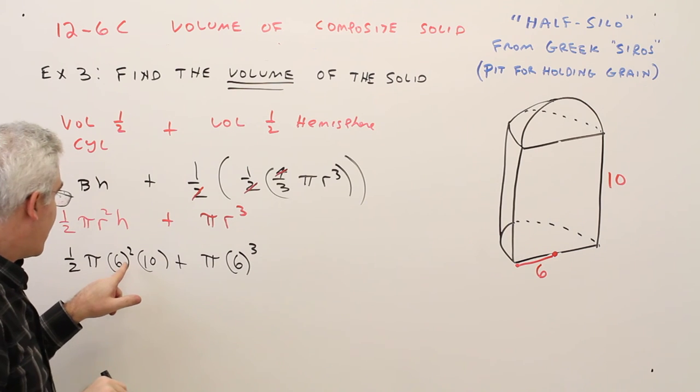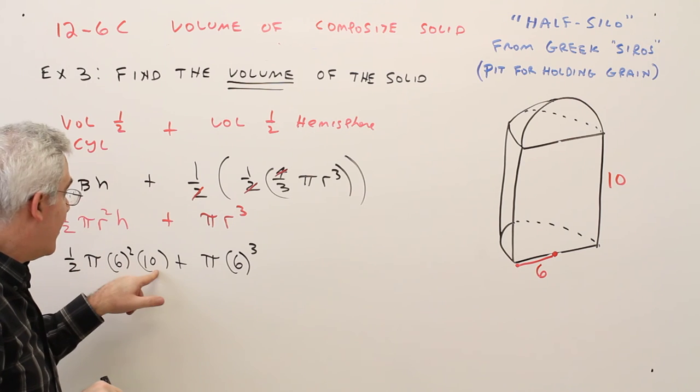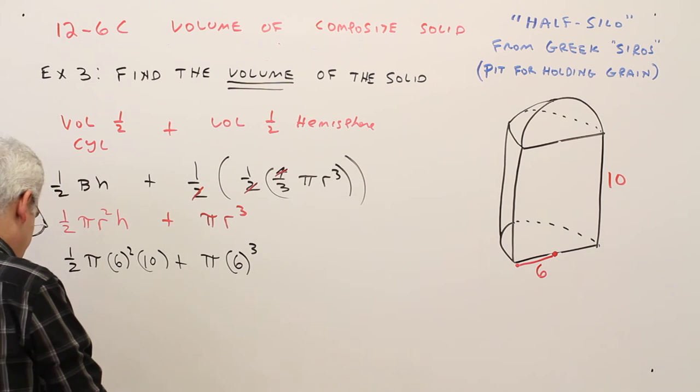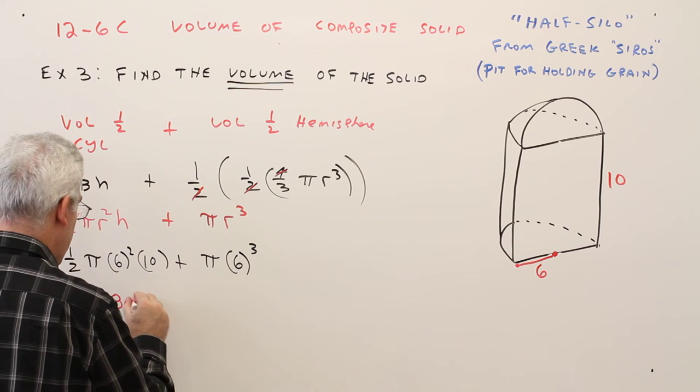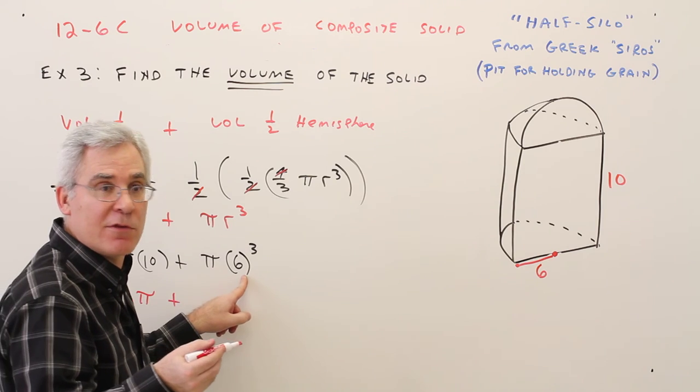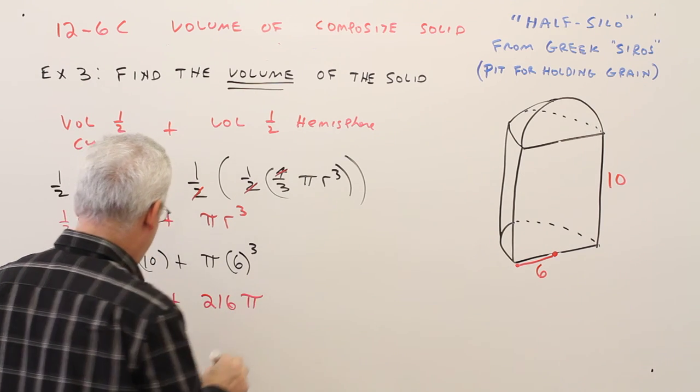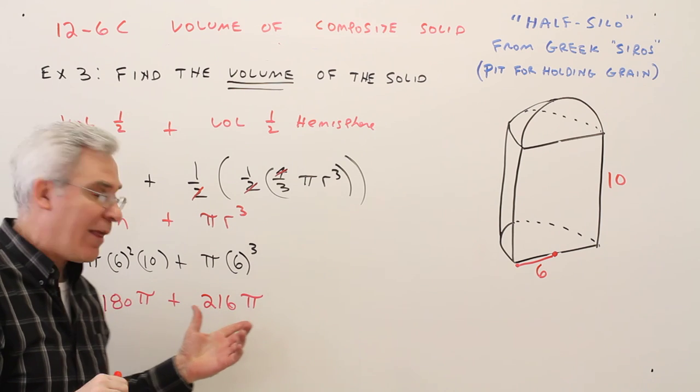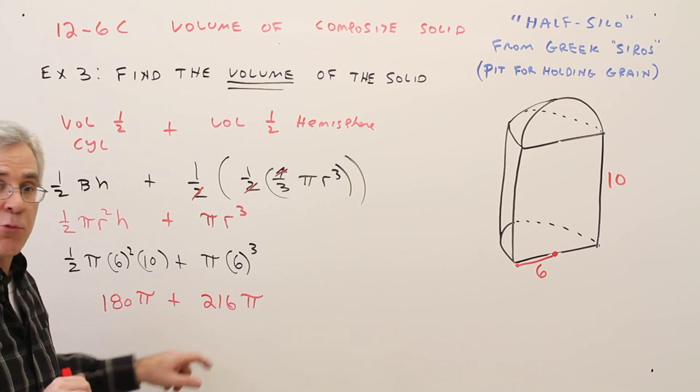Alright, so this is going to be 36 divided by 2, 18 times 10, so 180 pi. Plus six cubed, after a while you've memorized it, 216, plus 216 pi. And I'm just going to add these together. So 80 to that is 96, so 396 pi.